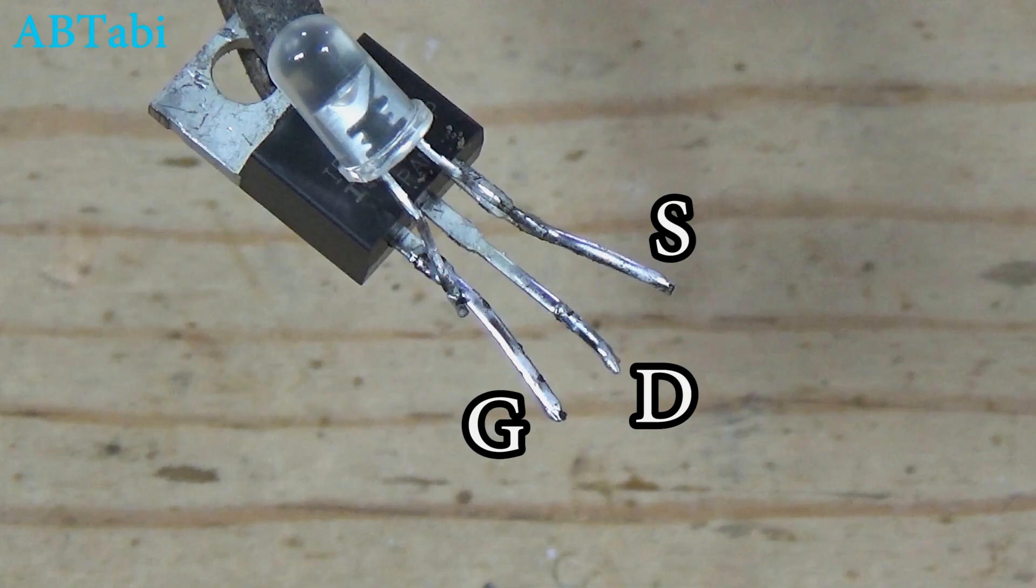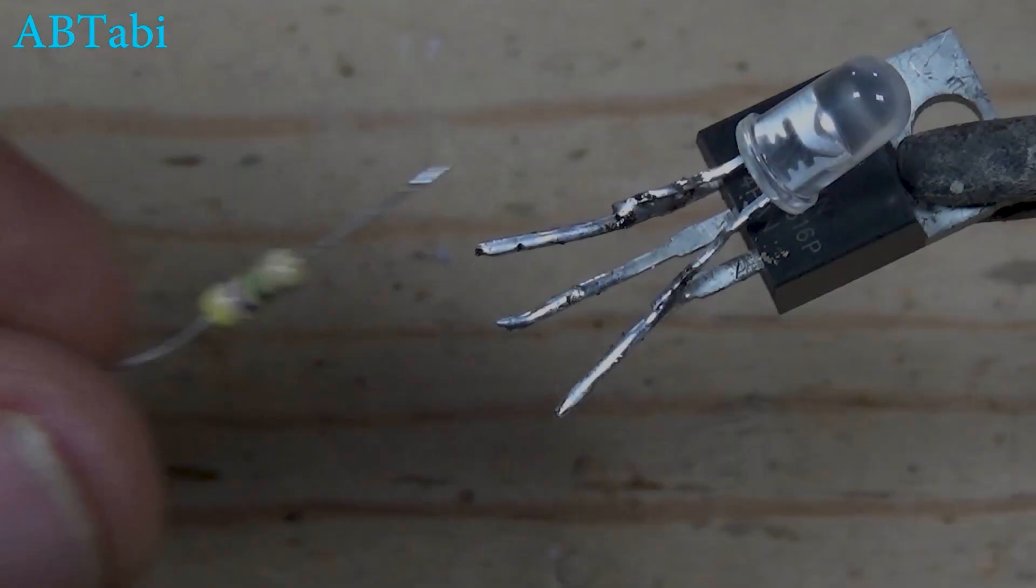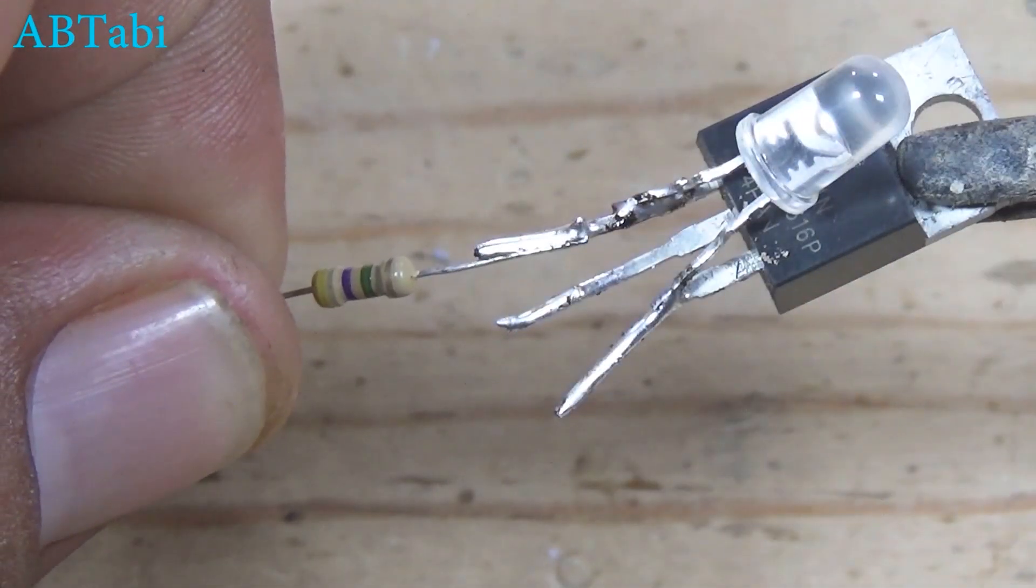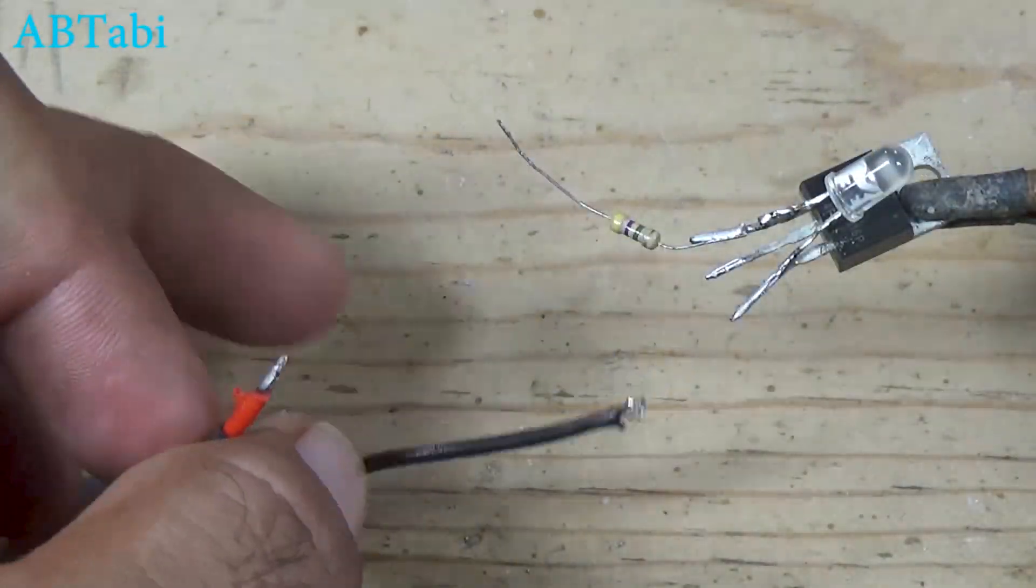Next, connect the 4.7 megaohm resistor to the gate pin of the MOSFET. Now connect the negative side of the 12 volt LED light to the drain pin of the MOSFET.